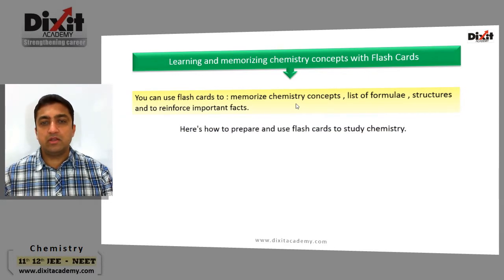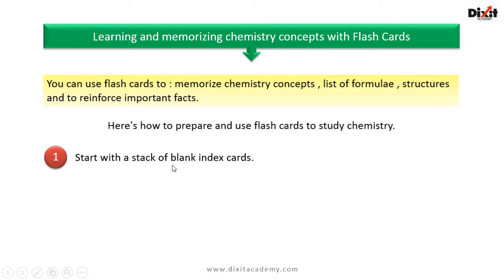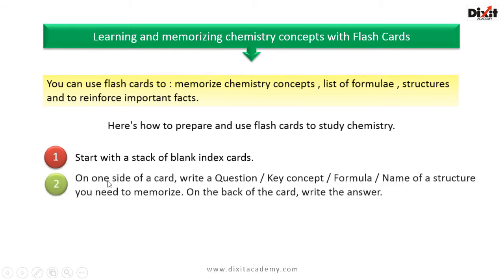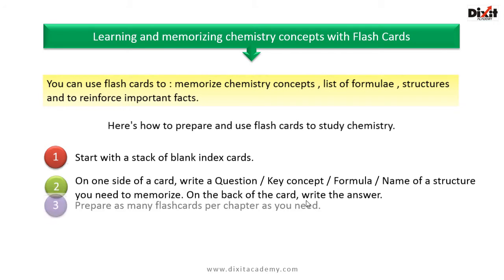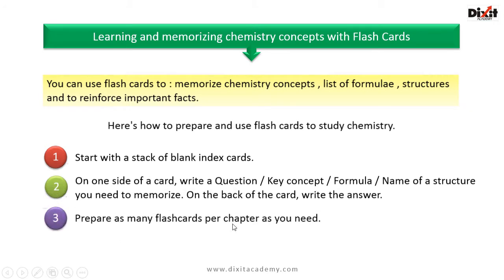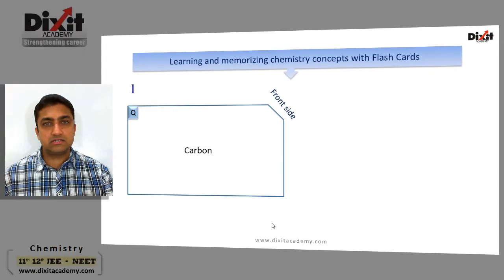Here is how to prepare and use flashcards to study chemistry. Start with a stack of blank index cards. On one side of the card write a question, key concept, formula, or name of the structure you need to memorize. On the back of the card write down the answer or explain the concept in brief. Prepare as many flashcards per chapter as you need, then shuffle the cards and memorize the concepts.